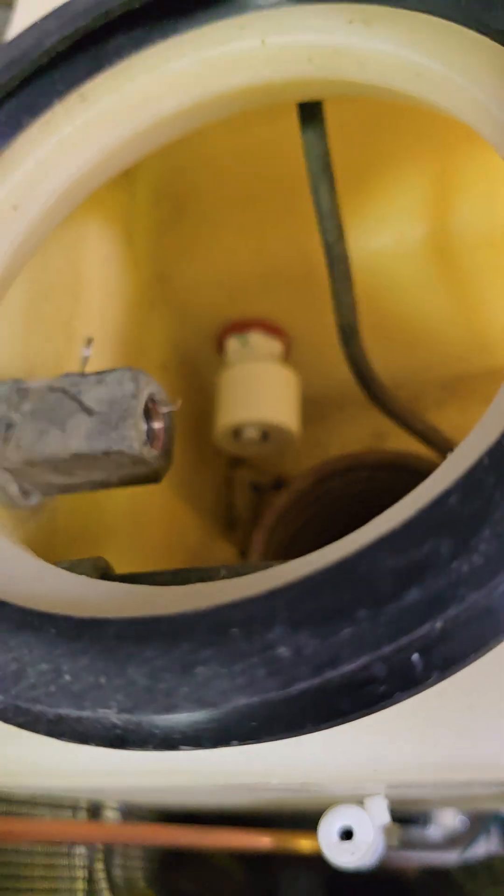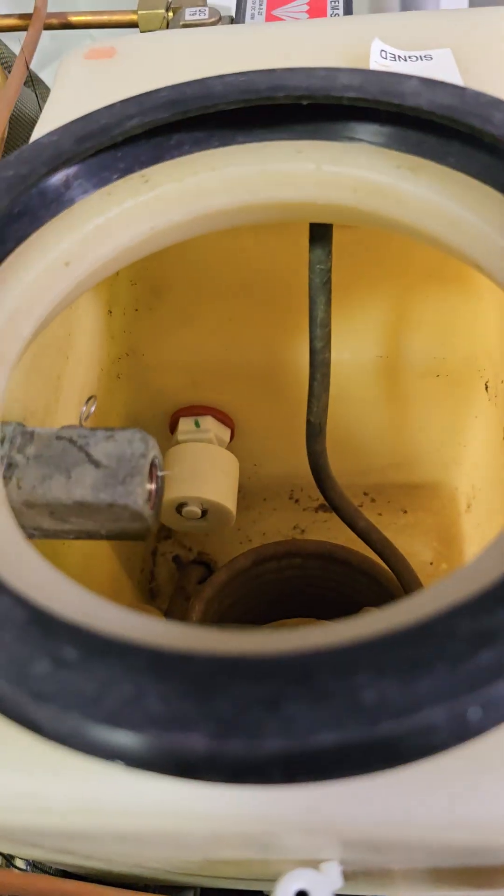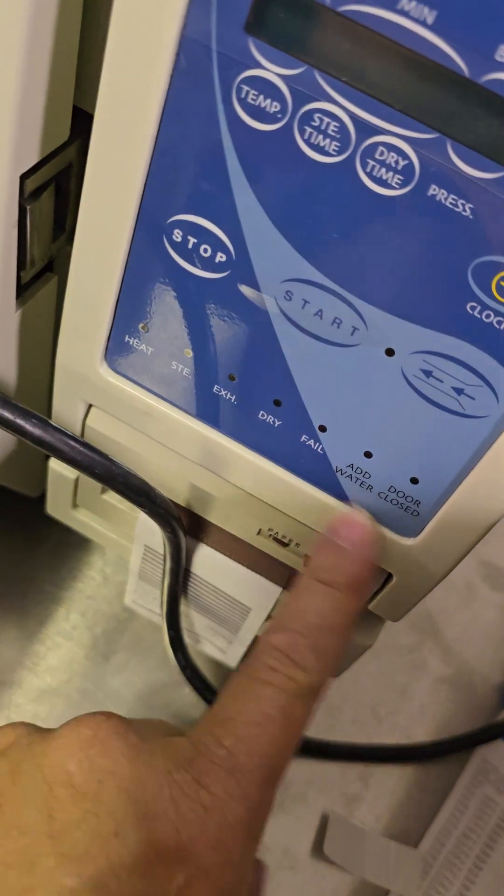Now, when you turn it on and you have water in here and that is floating up because it's why it's called a float switch, the add water light will go off.